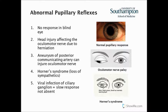Number one on the list: we wouldn't get a response, either direct or consensual, in a blind eye for any reason. If we had a retinal lesion or disease, we'd expect no response. If we had a lesion on the optic nerve somewhere between the retina and the optic chiasm, again we'd expect no response — the eye would be blind and therefore the response wouldn't work.